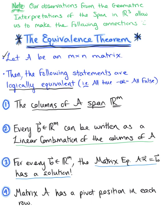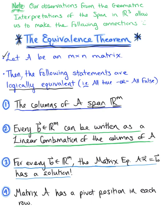These are the four statements of our logical equivalence: if the columns of matrix A span Rᵐ, then every vector B in Rᵐ can be written as a linear combination of the columns of matrix A, which tells us that the matrix equation Ax = B has a solution, and last but not least, this tells us that matrix A has a pivot position in each row.